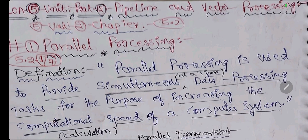Hi everybody, I am Prasad. Now we are going to discuss Parallel Processing. This is the topic from the 5th Unit, 2nd Chapter - Pipelining and Vector Processing. This question was asked in the 2021 March paper. The SMS question was: write about parallel processing and explain Flynn's classification of computers.